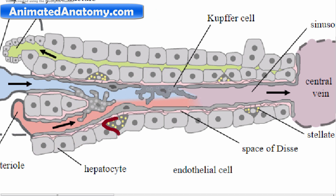Now let's explain the stellate cells. In a normal liver, stellate cells are described as being in a quiescent state. Quiescent stellate cells represent 5–8% of the total number of liver cells. These cells wrap around the sinusoid — imagine the sinusoid as a tube and they wrap around it. So far there are assumptions, but the function and role of quiescent hepatic stellate cells remains unclear.